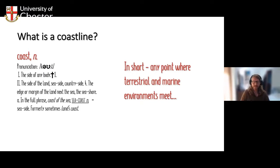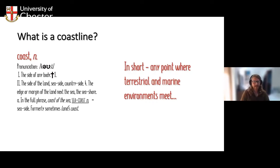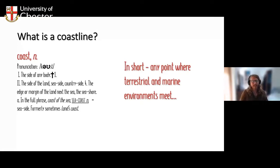Terrestrial environments can be hugely diverse - we have everything from deserts to ice caps, marshes to jungles and plains - all with different processes controlling how they are. But at the coastline, all those terrestrial processes meet a whole other set of processes from the marine environment: waves, tides and currents. It's really the interaction of processes from those two different environments that makes coasts such a diverse and interesting area of study.